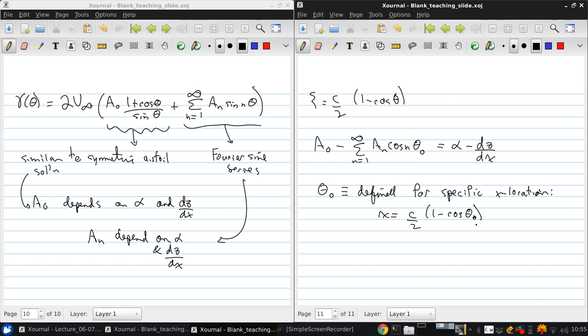So this is the differentiator from theta, which is related to the dummy variable of integration. Then dz dx is alpha minus a0 plus the infinite series term. And again, this is for a given x.